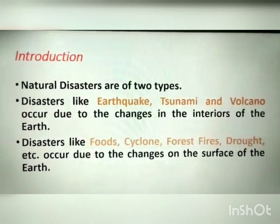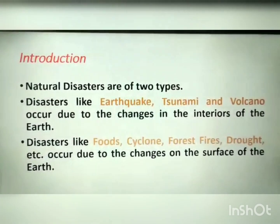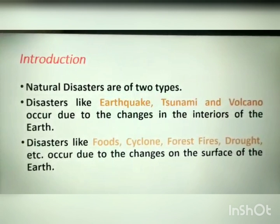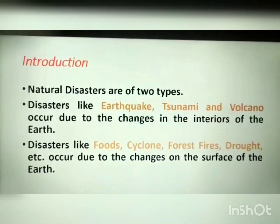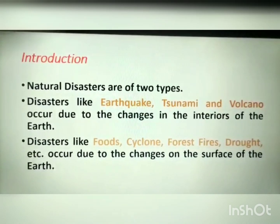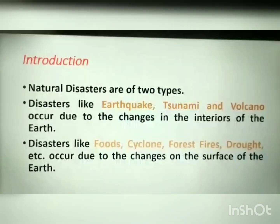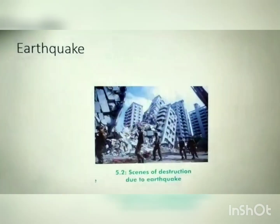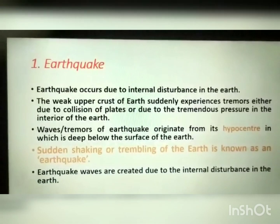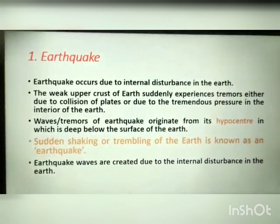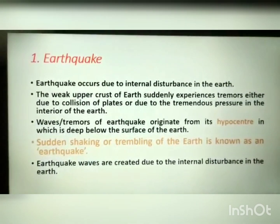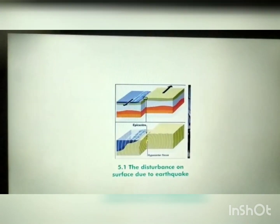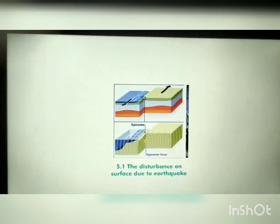First, we learned that there are two types of natural disasters: one is the disaster caused due to the changes in the interior of the earth, and the other caused due to changes on the surface of the earth. First we learned about earthquakes — earthquake occurs due to internal disturbance in the earth. We learned about the hypocenter and epicenter in an earthquake.